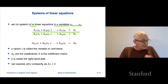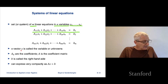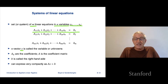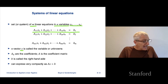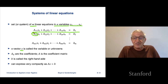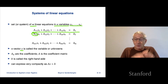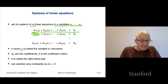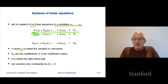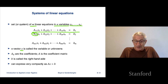So I have m of those equations. If we collect these x's into a vector called x, that's the variable or the unknowns. The entries Aij are the coefficients in the system. If you form matrix A, which in this case is m by n, that matrix is called the coefficient matrix of your system of linear equations.